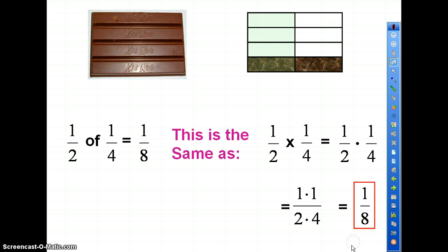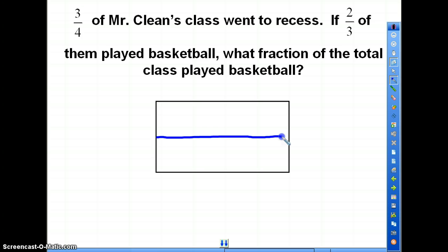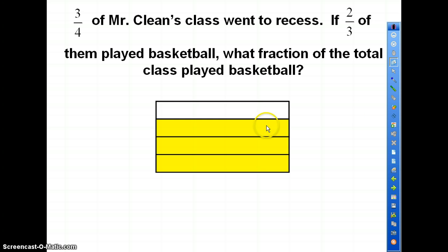Let's go on to problem number three. Three-fourths of Mr. Clean's class went to recess. If two-thirds of them played basketball, what fraction of the total class played basketball? I'm gonna use this rectangle to represent Mr. Clean's entire class. Three-fourths went to recess, so let's take the whole class, divide it in half, and then take the halves and divide those in halves. Now I've got it into fourths. Let's shade in three of those four bars.